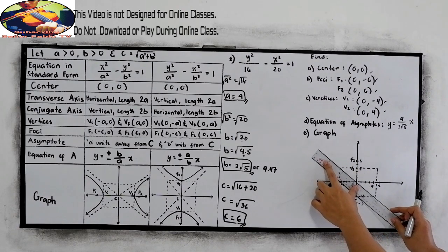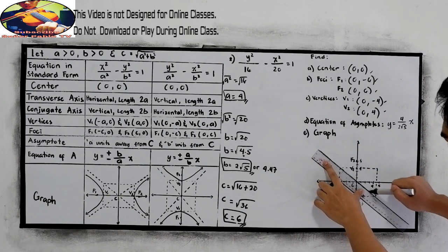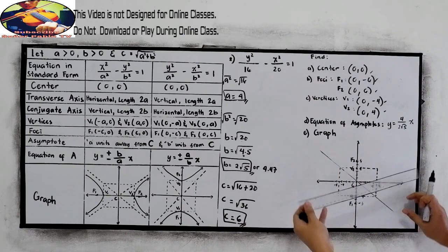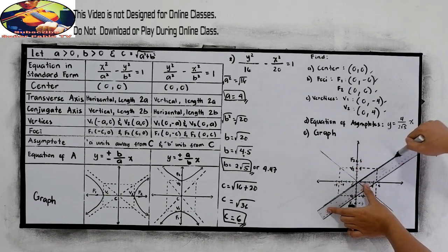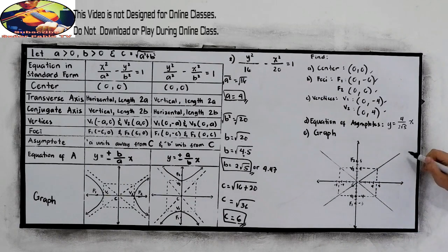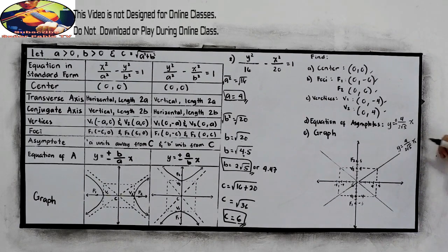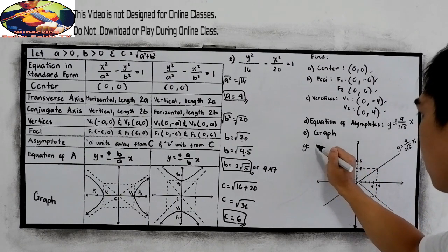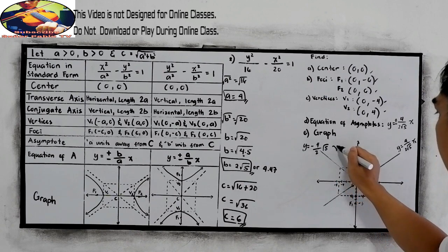Now, for our graph, draw the equation of the asymptote lines. This is the center. So y is equal to 4 over 2 square root of 5 times x, and the other one: y is equal to negative 4 over 2 square root of 5 times x.